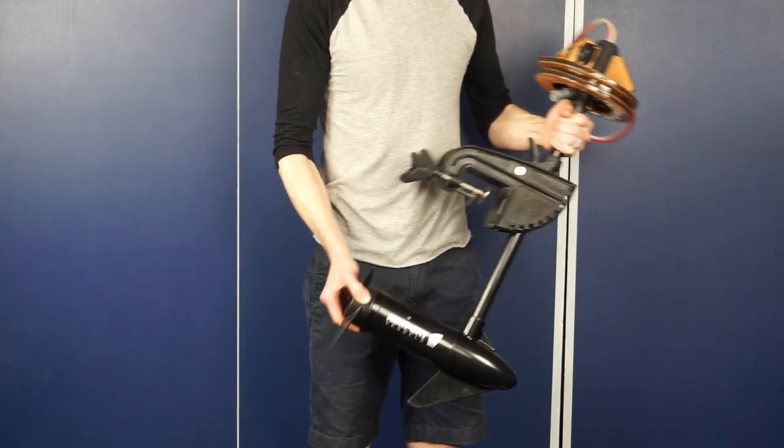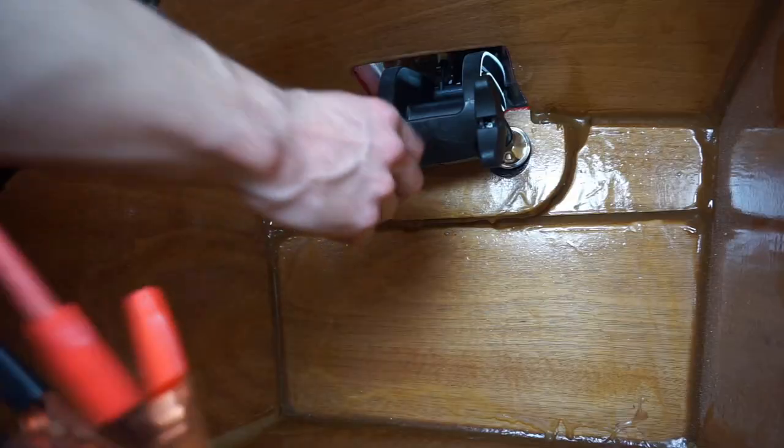This electric trolling motor propels the mini boat. It slides into the back of the boat and clamps down on the transom.